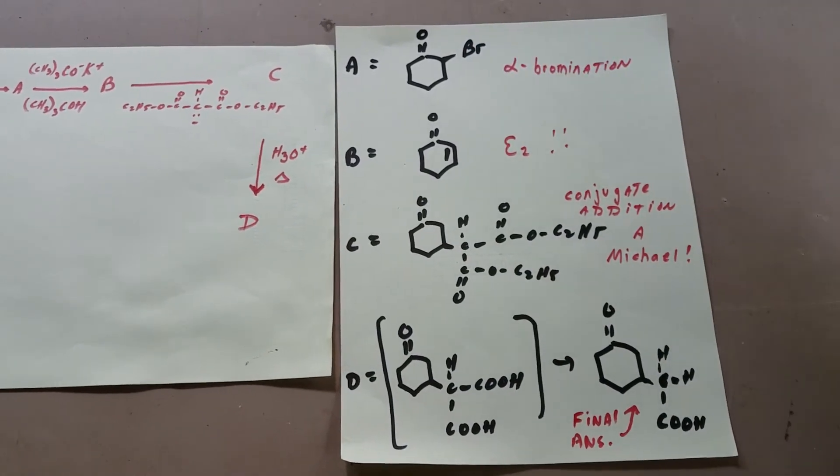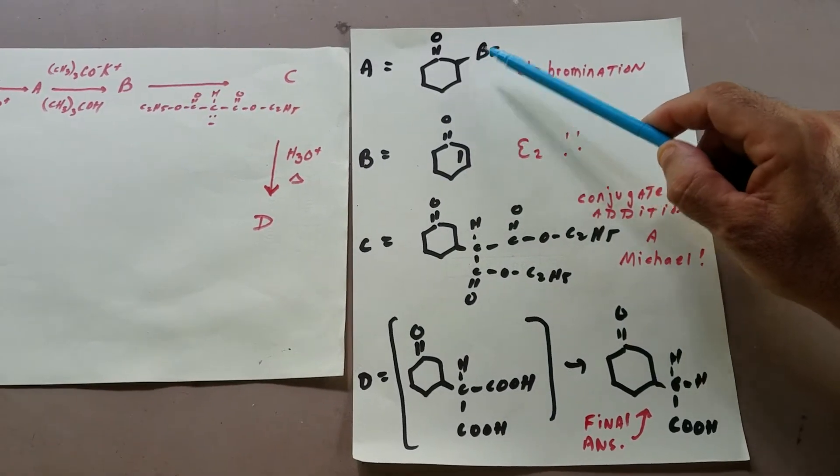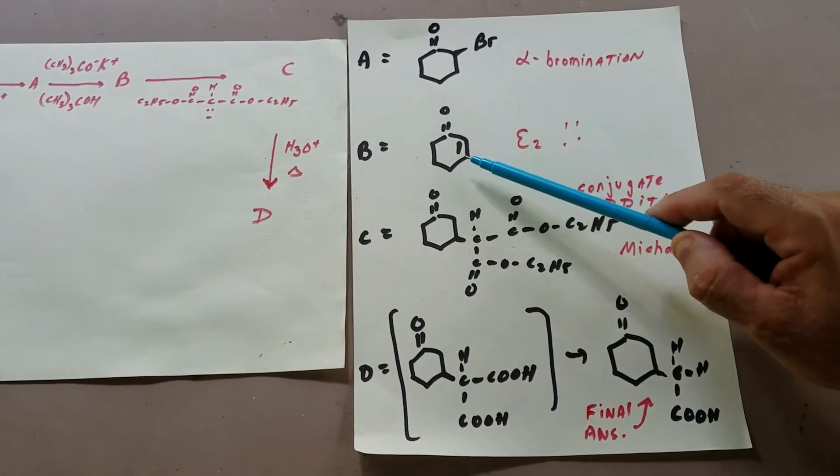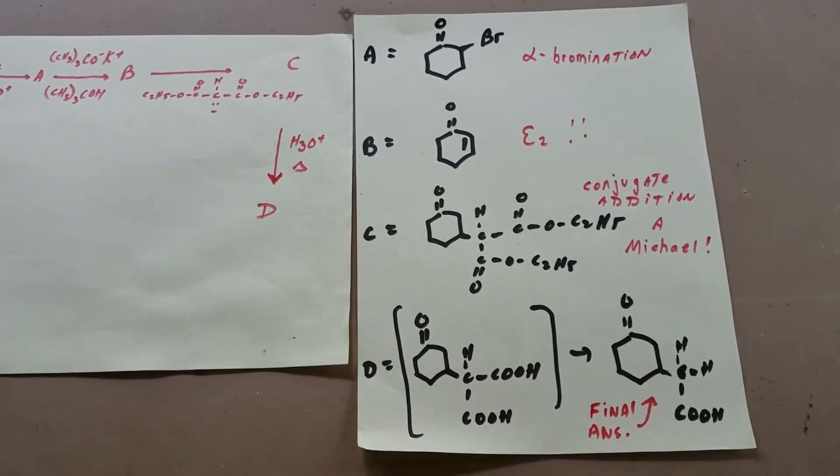So I did an alpha bromination. Next, the base removes the H and the Br to do an E2, and that gives me my conjugated ketone. Now here's where it gets a little bit tricky, and if you...